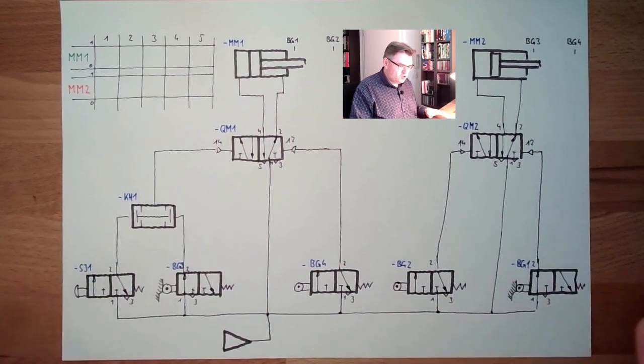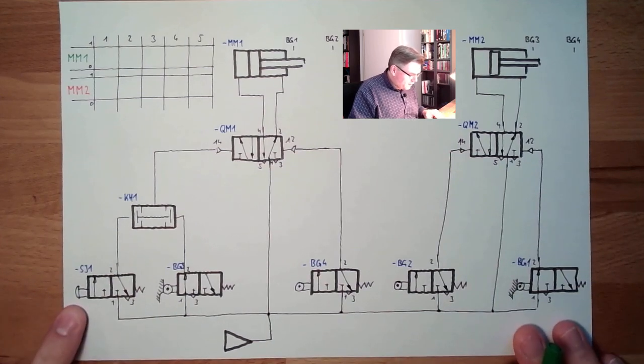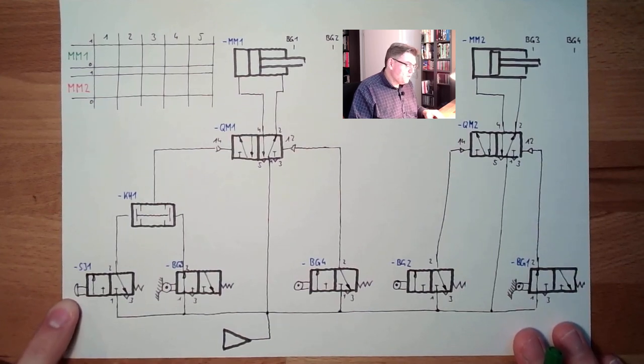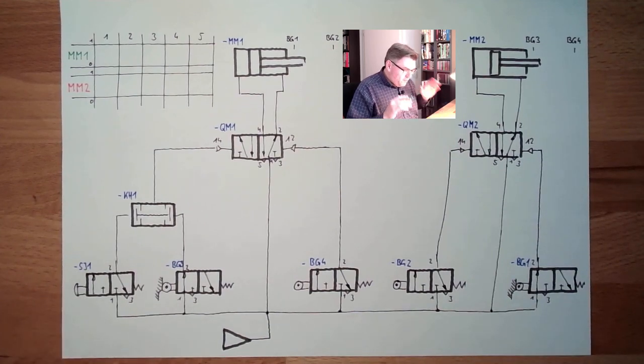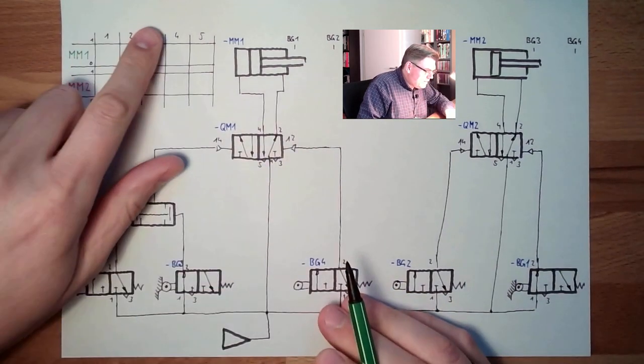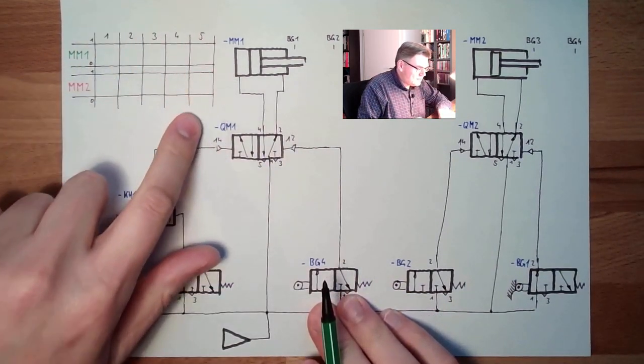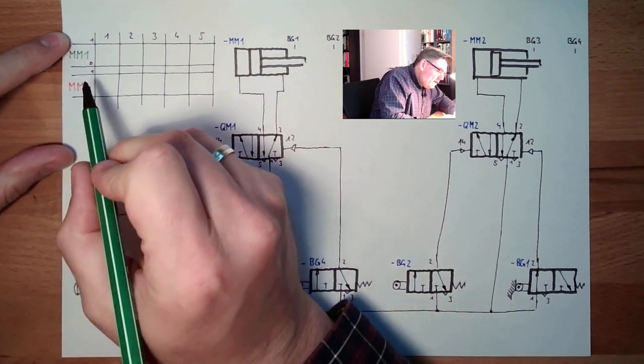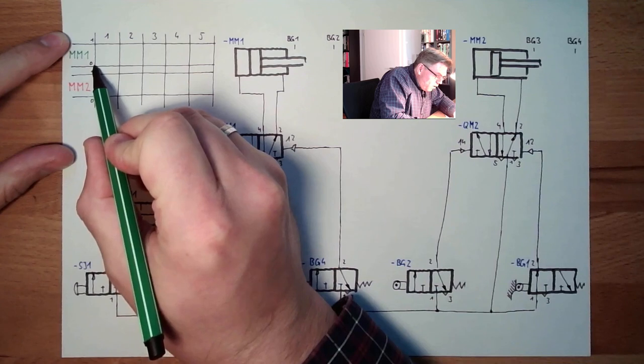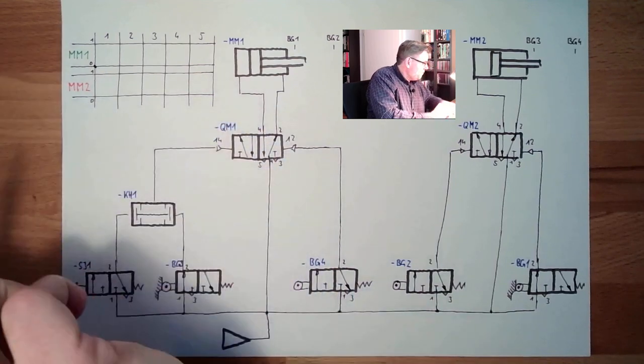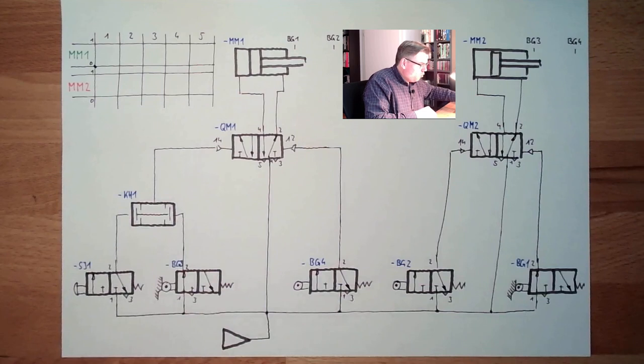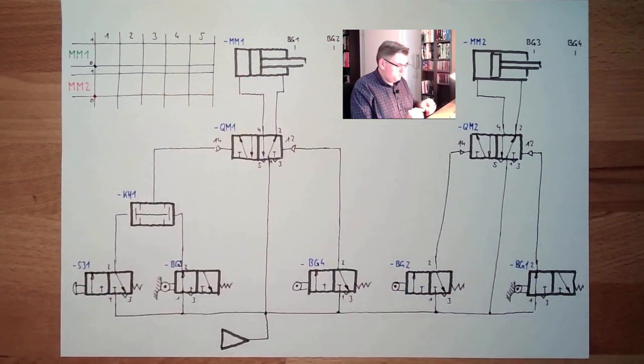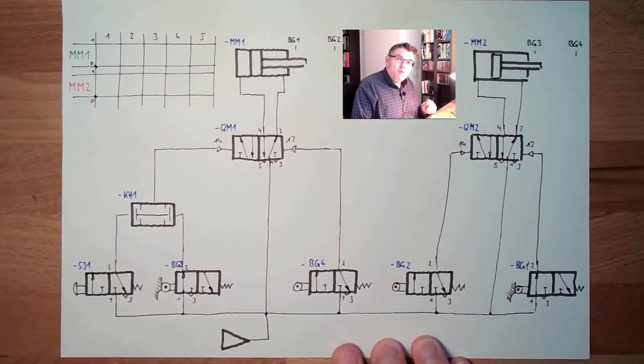Now this is the situation. Of course there is one button, and this would probably be the start button. At the beginning we have a step-way diagram. Currently, before step 1, MM1 is down here and MM2 is also inside. That's the initial condition.